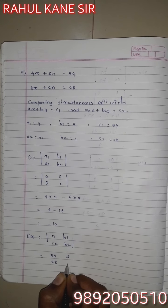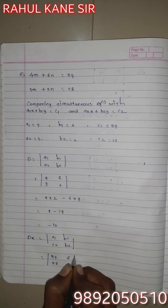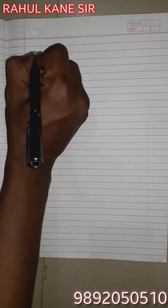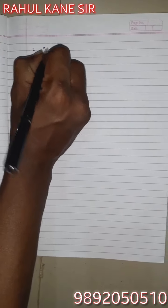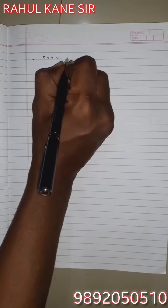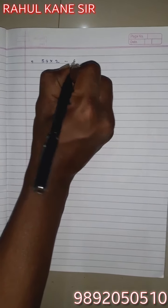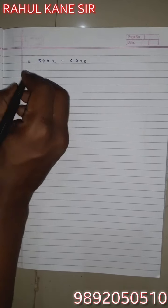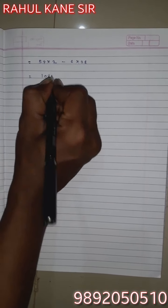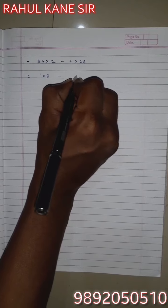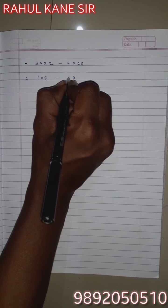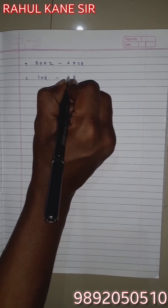Dx equals |c1, c2, b1, b2| equals |54, 28, 6, 2|. By cross multiplication: 54×2 minus 6×28. 54 twos are 108, 6 twenty-eights are 168. 108 minus 168 equals -60.